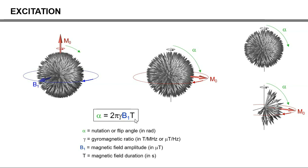Another thing I would like to point out is that I have been saying that B1 is a rotating magnetic field, which is indeed correct. However, it rotates at the Larmor frequency, and the Larmor frequency for most MRI systems is in the radio frequency, or RF, range. Furthermore, the B1 field is turned on for a short duration, T, and then turned off again — in other words, it is being applied as a pulse. So the rotating magnetic field B1 is very often referred to as a radio frequency, or RF, pulse. This will be discussed in great detail in a future video.